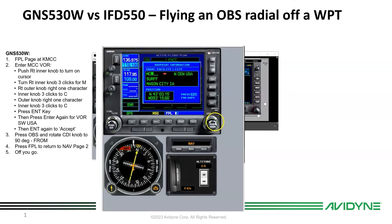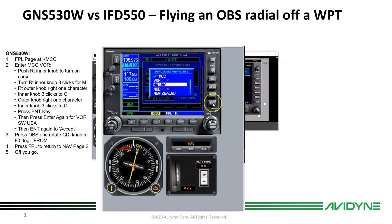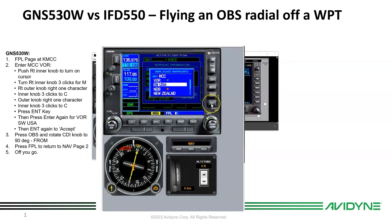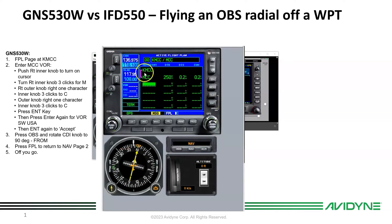I'll do the same thing again with the cursor — move over to C with the little knob, then hit enter. It's going to ask: do you want the MCC that's a VOR in the US, or the MCC in the database that's an NDB in New Zealand? It's an extra step, but we want the VOR, which is correct, and now we accept that. Now we've got our flight plan from MCC.